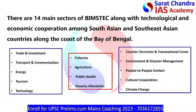There are 14 main sectors of BIMSTEC, along with technological and economic cooperation among South Asian and Southeast Asian countries along the coast of the Bay of Bengal. These include trade and investment, transport and communication, energy, tourism, technology, fisheries, agriculture, public health, poverty alleviation, counter-terrorism and transnational crime, environment and disaster management, people-to-people contact, cultural cooperation, and climate change.